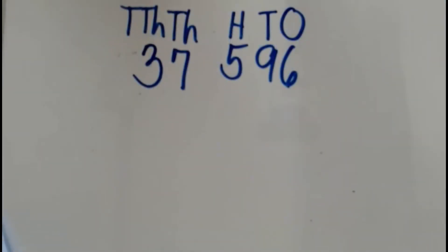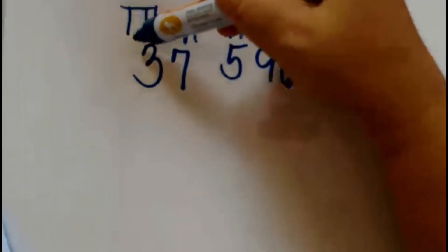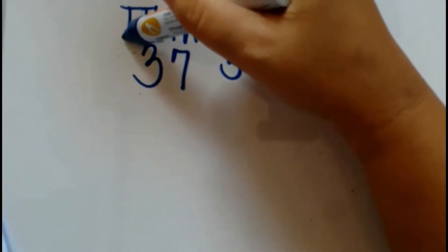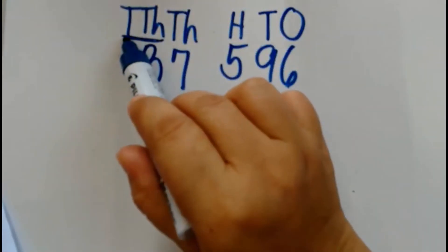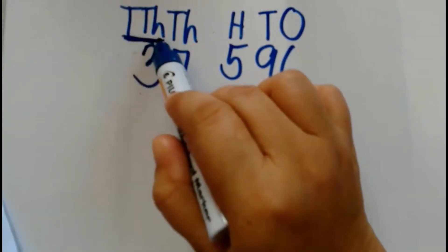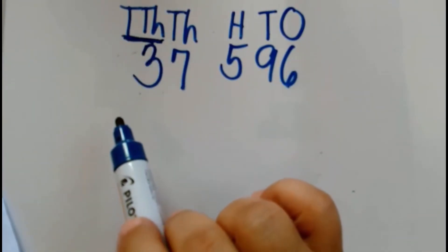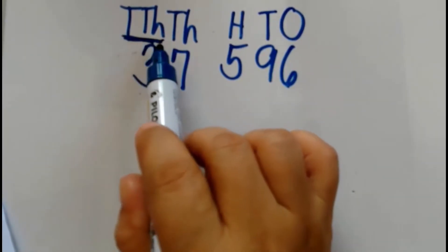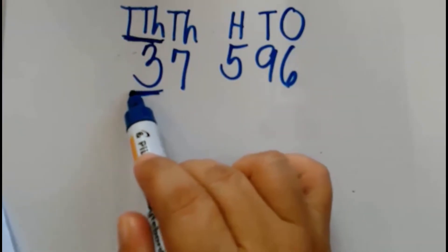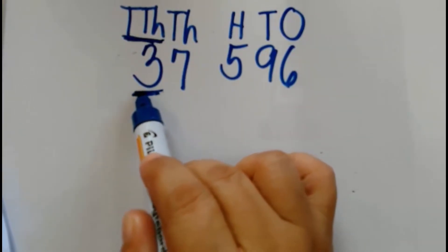Since we will be rounding this number to the nearest ten thousands, I will underline the ten thousands place value. Step 2 is to identify the digit to be rounded off. Since we are rounding to the nearest ten thousands, we identify the digit found under the ten thousands place, which is 3. Therefore, 3 is the digit that we need to round off.